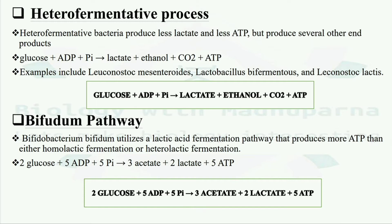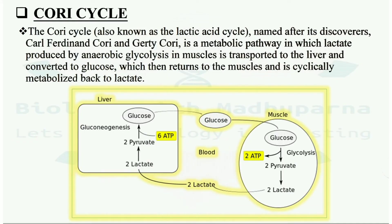Next is the Cori cycle, also known as the lactic acid cycle, named after its discoverers Ferdinand Cori and Gerty Cori. It is a metabolic pathway in which lactate produced by anaerobic glycolysis in muscles is transported to the liver and converted to glucose, which then returns to the muscles and is cyclically metabolized back to lactate. The Cori cycle is a major fate of pyruvate under anaerobic condition.